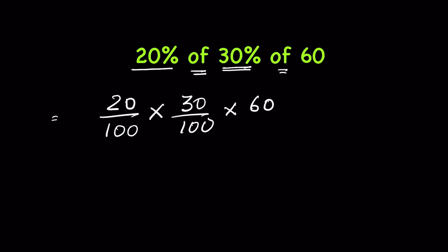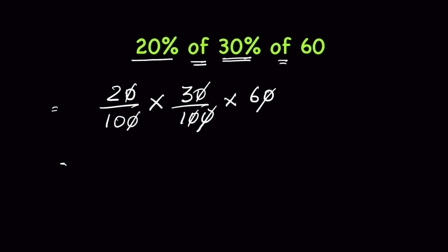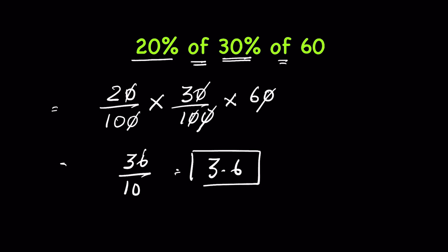Now you cancel the zeros — the zeros get cancelled — so we have 2 times 3 is 6, and 6 times 6 is 36, upon 10. In decimal form we write it as 3.6. So 20 percent of 30 percent of 60 is 3.6. This is the answer.